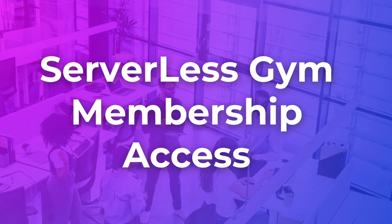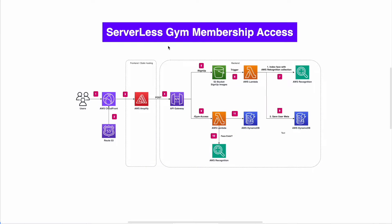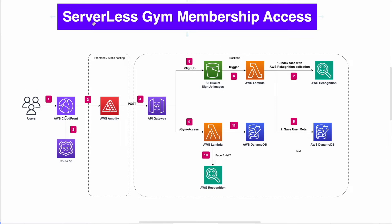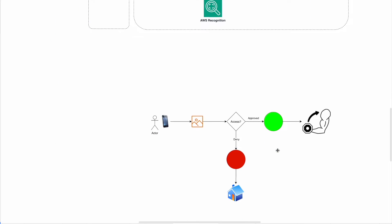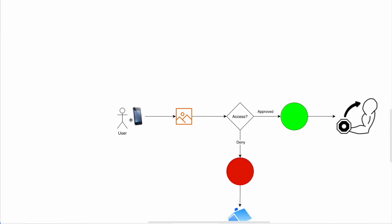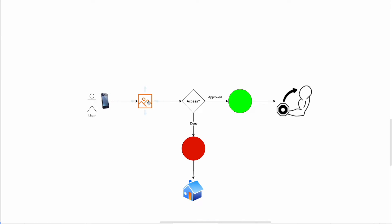Let's start with our first AWS real-world project: serverless gym membership access. In this project I'll share how you can build an amazing serverless system that helps gym owners give their members the option to enter the gym through face recognition. Basically, a gym member with their phone takes a selfie and sends it to our serverless gym membership access system.